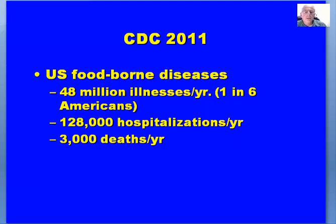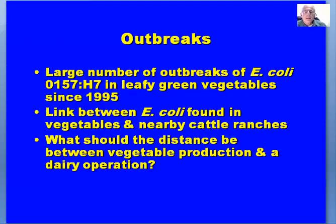Approximately 3,000 people each year die as a result of foodborne diseases, and in most instances these are going to be bacterial in nature. Looking at outbreaks, a large number of outbreaks of E. coli O157:H7 and leafy green vegetables have occurred since 1965. We continue to see this — we've seen a lot over the past two or three months with O121 being the foodborne pathogen, and links have been found between E. coli found in vegetables and nearby cattle ranches.